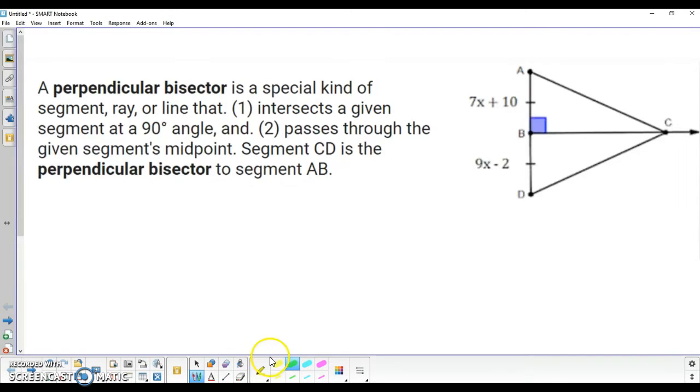Prior to that though, let's take a look at what a perpendicular bisector means. It's essentially a special kind of segment, ray, or line that does two things. First, it must be perpendicular, which means it intersects a given segment at a 90 degree angle.